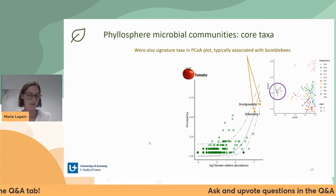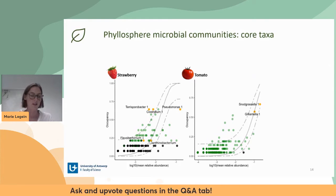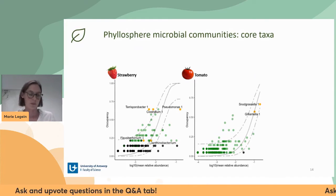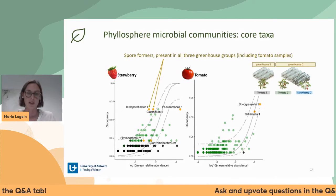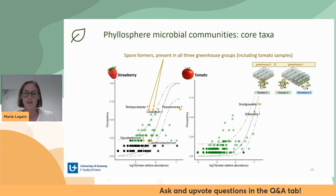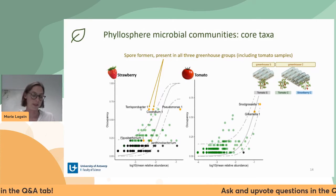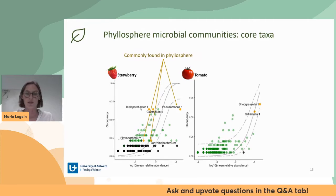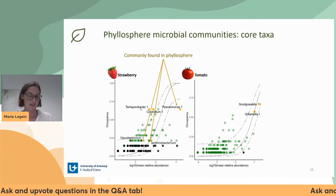For strawberry samples, we see four or five core taxa from the genera Clostridium, Terrisporobacter, Pseudomonas, Ianthinobacterium, and Flavobacterium. Terrisporobacter and Clostridium are spore formers and were present in all three greenhouse groups, making them quite persistent. The other three are commonly found in phyllospheres, which is less surprising than the Snodgrassella and Gilliamella from the tomato samples.